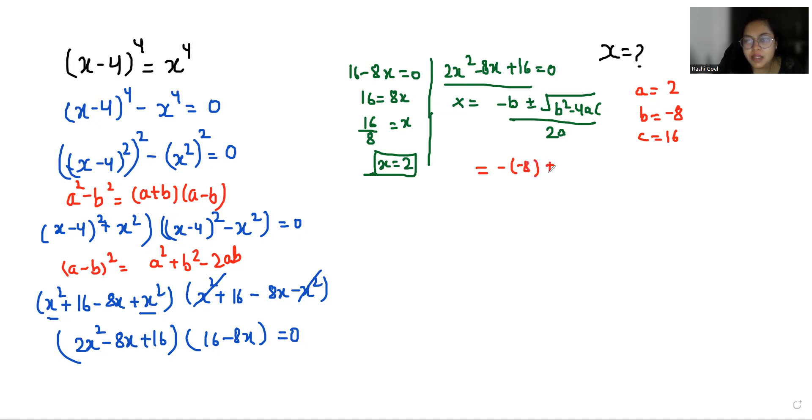So, -(-8) ± √((-8)² - 4 × 2 × 16) / (2 × 2).